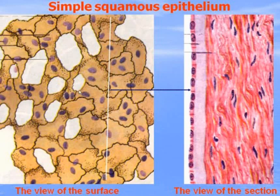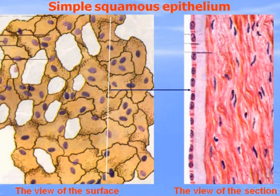This is an example of simple squamous epithelium. Viewed from the surface and in cross-section, you can see that the cells are flat. There are two main types of simple squamous epithelium: mesothelium, which lines all serous membranes of the body — peritoneum, pleura, and pericardium — and endothelium, which lines all blood and lymphatic vessels and the heart, and is in contact with blood or lymph.